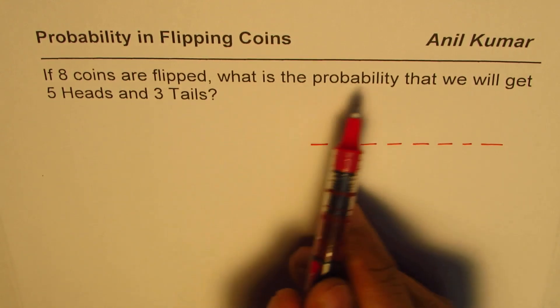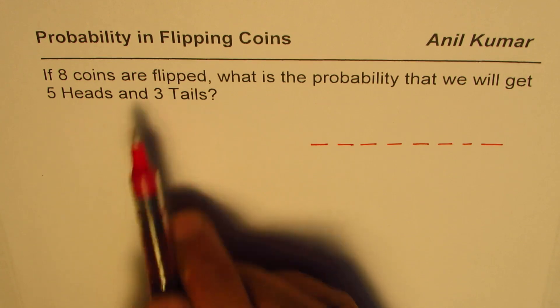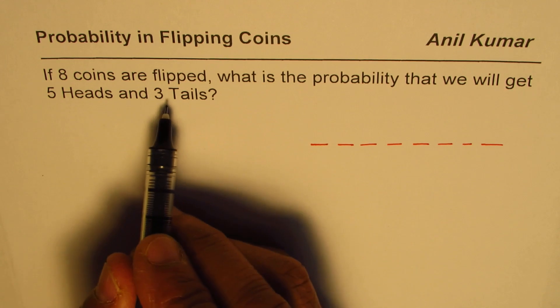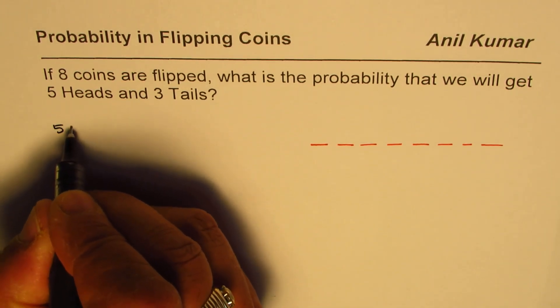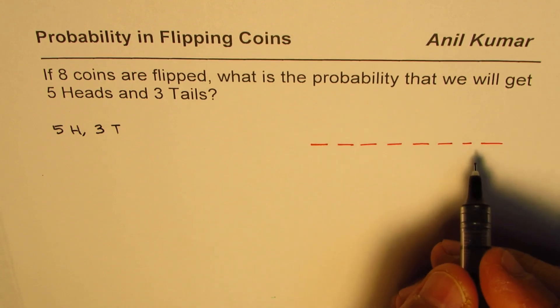Now it says, what is the probability that we will get 5 heads and 3 tails? When we say 5 heads and 3 tails, we are saying 5 heads and 3 tails. So that is combinations 8.